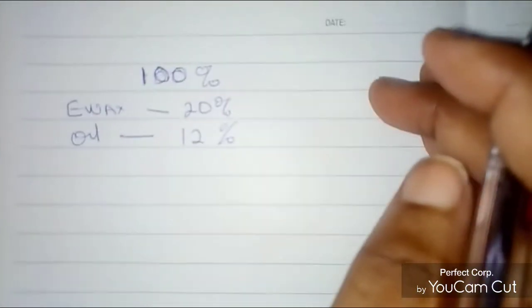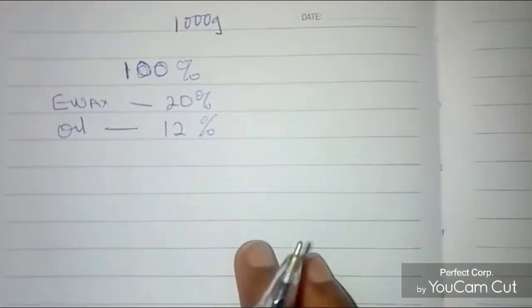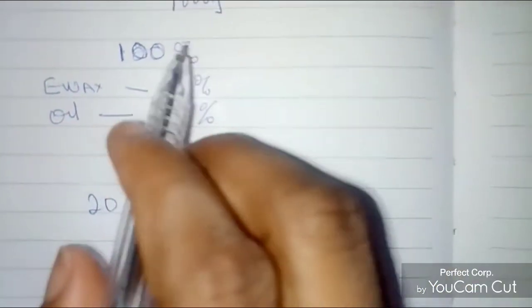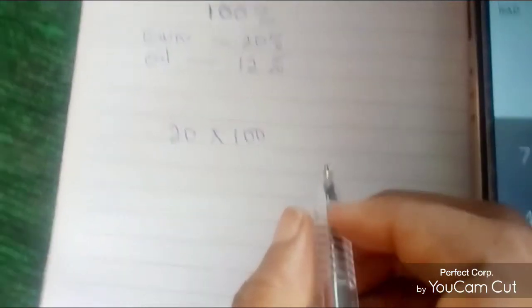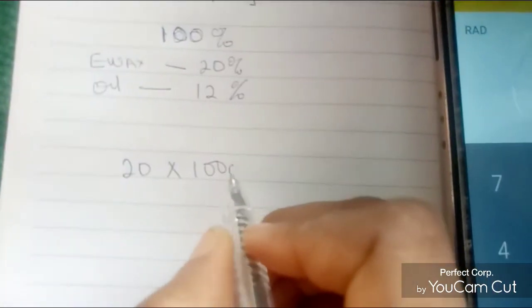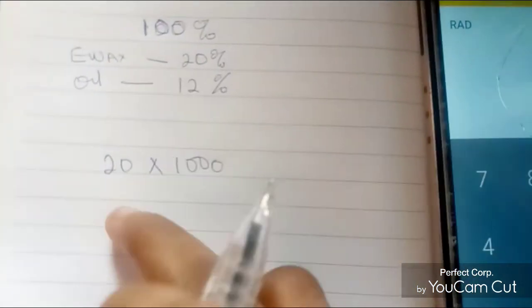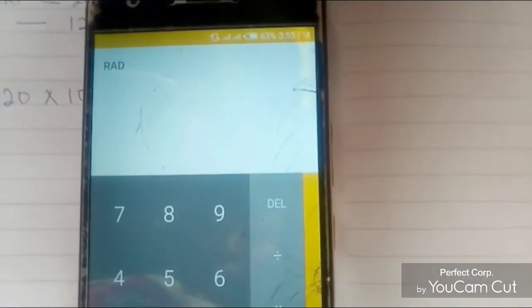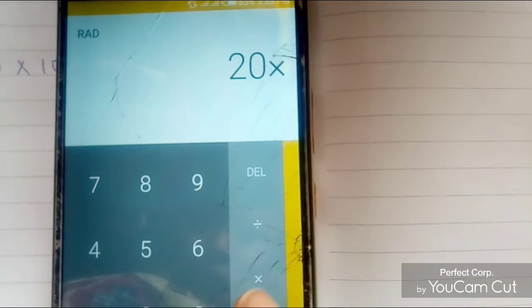Let's say your oil is 12%. I'm just giving an illustration, okay? You're making 1000 grams altogether. So what you are going to do: your emulsifying wax that is 20%, you're going to say 20 times the 1000 grams. So you're going to write 20 times the grams you're making, a thousand grams of lotion or whatever you're making. So now you're going to say 20 times 1000.